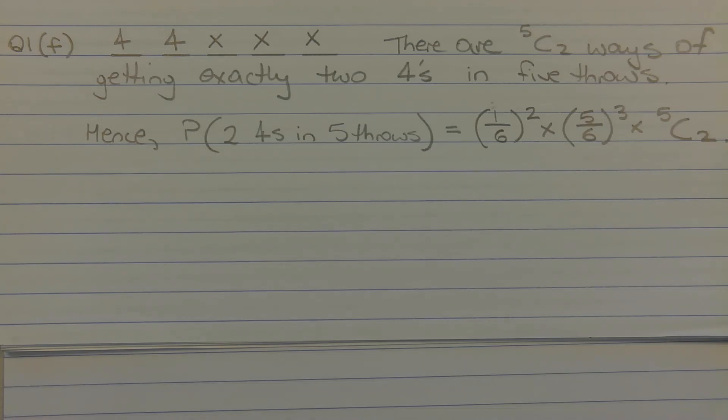Now the question does not state a particular order in which the two fours must occur. So we need to account for every possible way we can obtain two fours out of five rolls of a standard six-sided die.